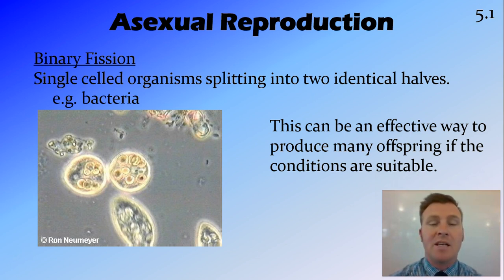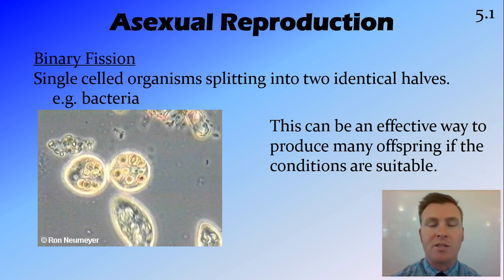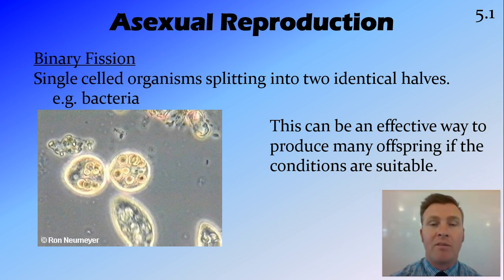This form of asexual reproduction can be very effective when the conditions are stable. So when you have the right temperature, the right amount of nutrients, the right amount of sunlight, this binary fission can cause many many organisms to be produced.